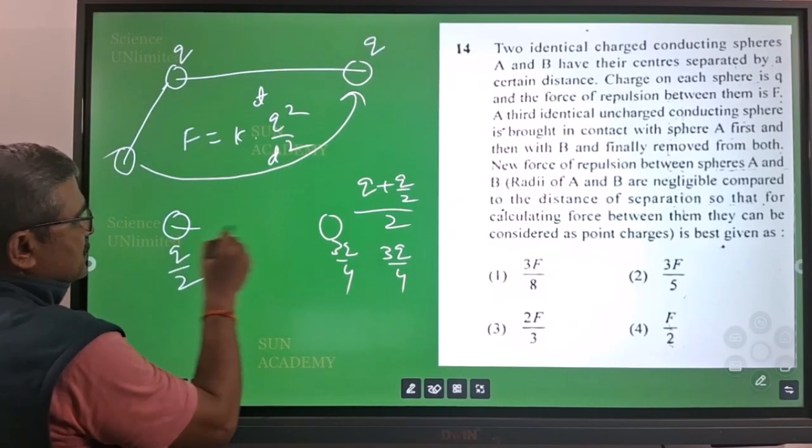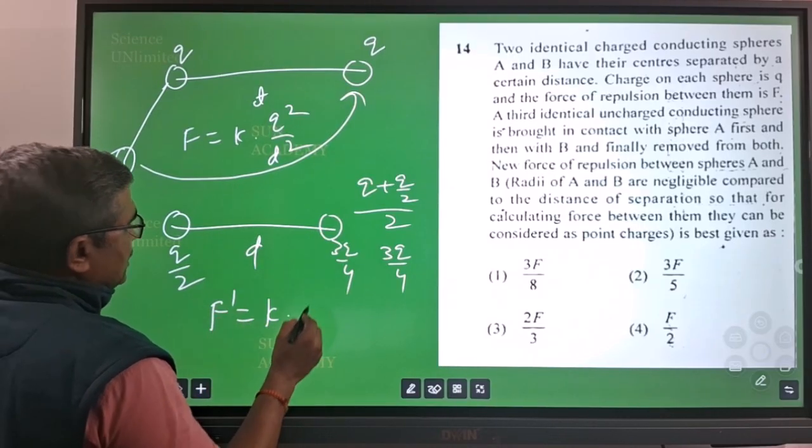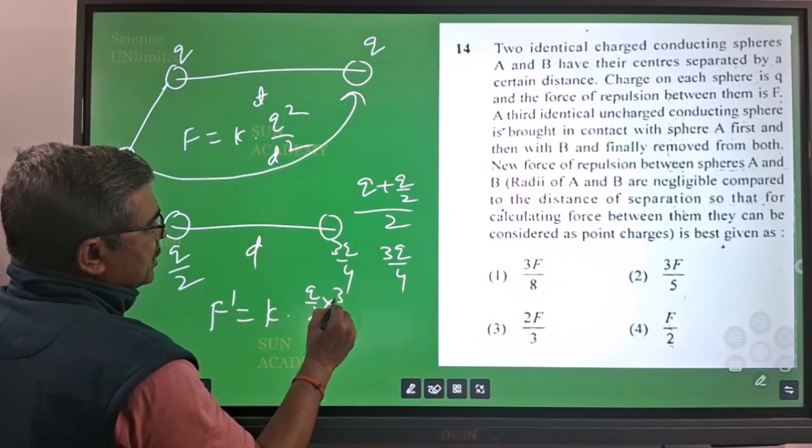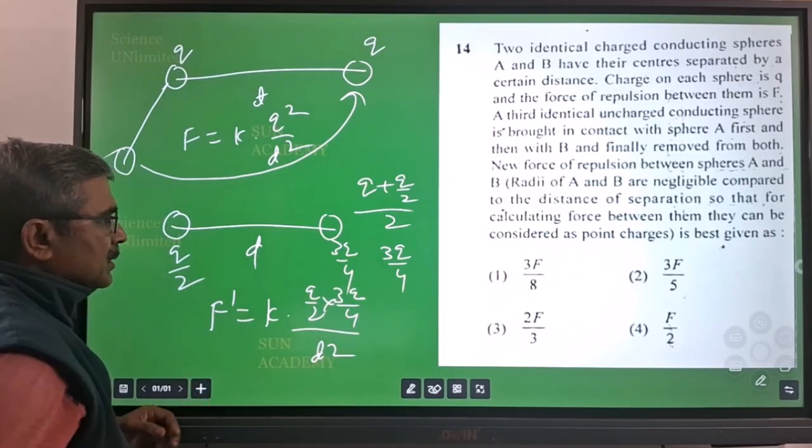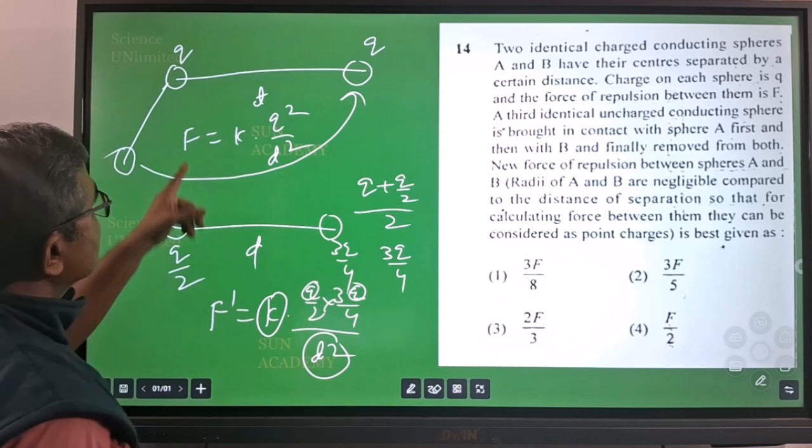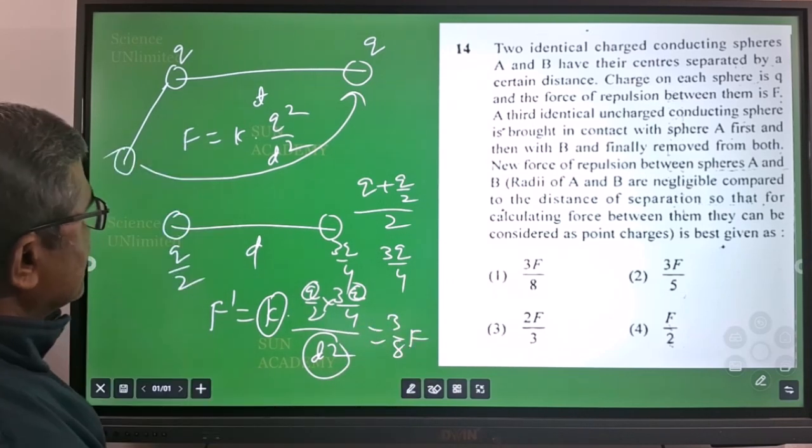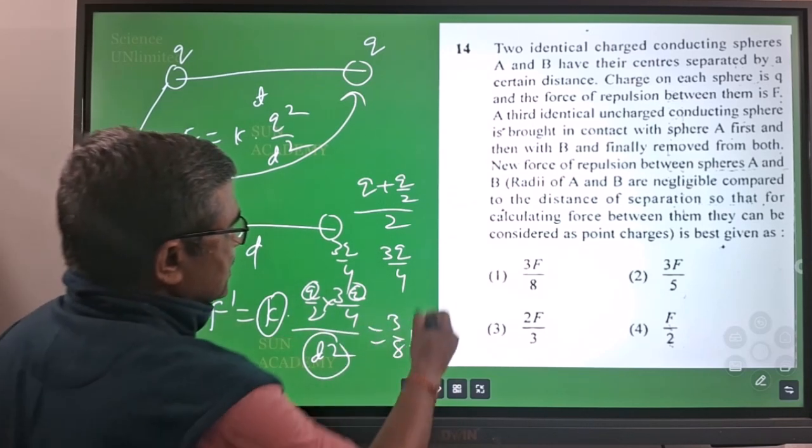Now the force - you are not changing the distance. So force f dash is equal to k into q by 2 into 3q by 4 divided by d square. k d square and q square resembles with this f, so here 3 by 8 into f. Your answer will be 3 by 8 into f. So answer is first one.